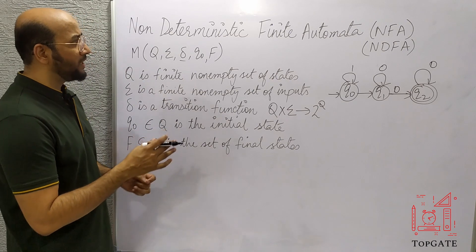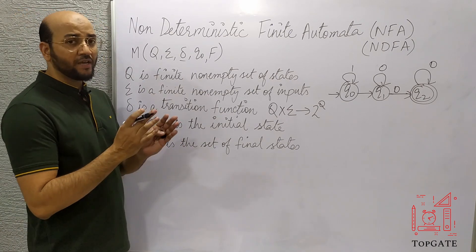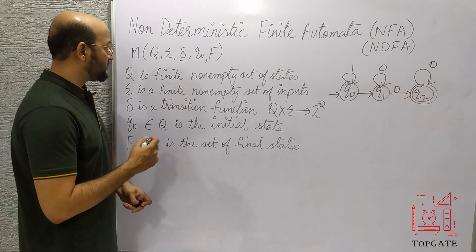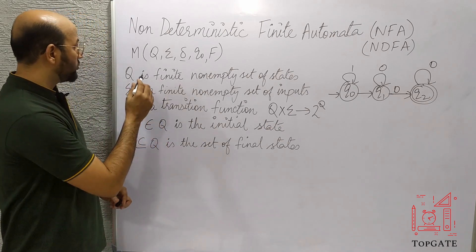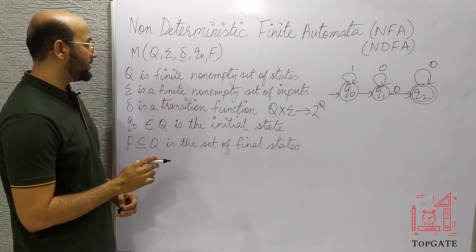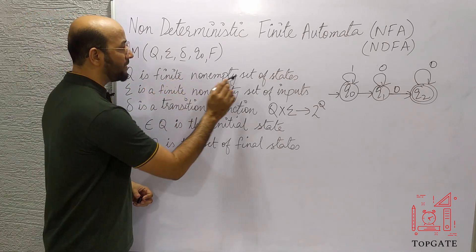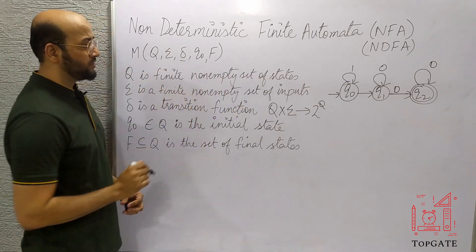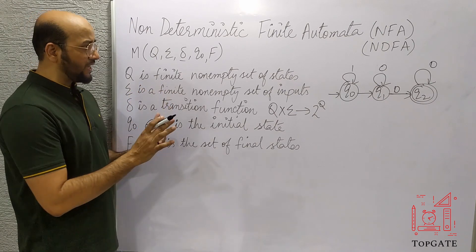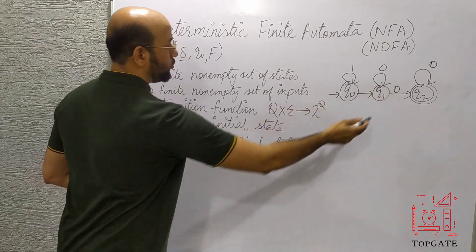I will also tell you what is the difference between deterministic and non-deterministic. So the first tuple we have is Q, which is the same as DFA. Q is a finite non-empty set of states. We have states like Q0, Q1, Q2.